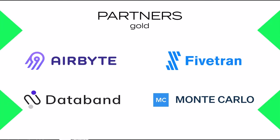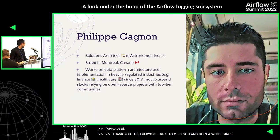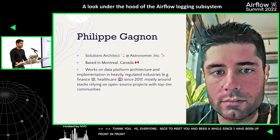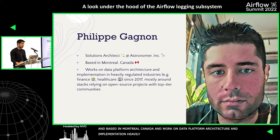Hi everyone, it's nice to meet you. It's been a while since I've been at the podium in person. My name is Philip Gagnon. I'm a Solutions Architect with AstroHimer, based in Montreal, Canada — we're fully remote. I mostly work on data platform architecture and implementation, previously in heavily regulated industries such as finance and healthcare, since 2017, mostly building stacks around top open source projects like Apache Airflow.